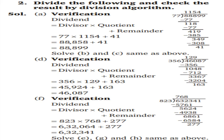Second question: divide the following and check the result by the division algorithm. Part A: 88,899 ÷ 77. First we divide: quotient is 1,154 and remainder is 41. After dividing, we verify: dividend = divisor × quotient + remainder. Put the values: 77 × 1,154 + 41 = 88,858 + 41 = 88,899. This equals our dividend.